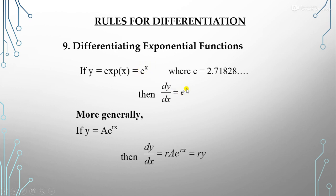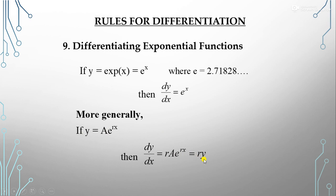More generally, if our function is y = a·e^(rx), where a and r are constants, then dy/dx = r·a·e^(rx). We can solve this using the chain rule. Since a·e^(rx) = y, we can write dy/dx = r·y.